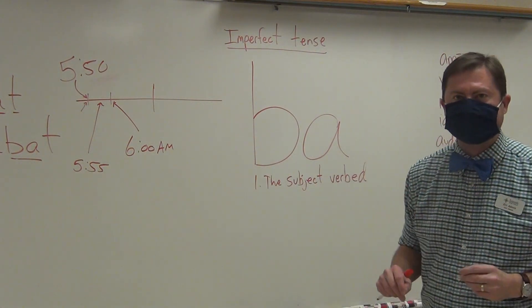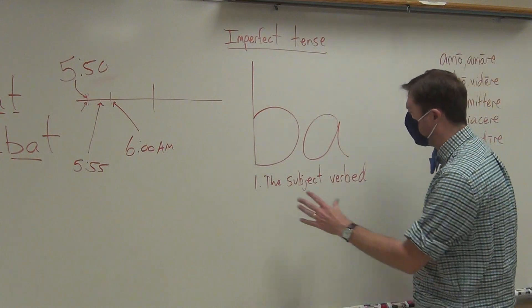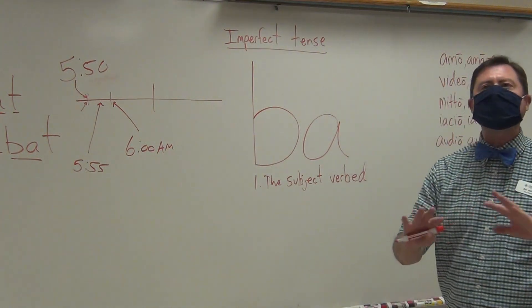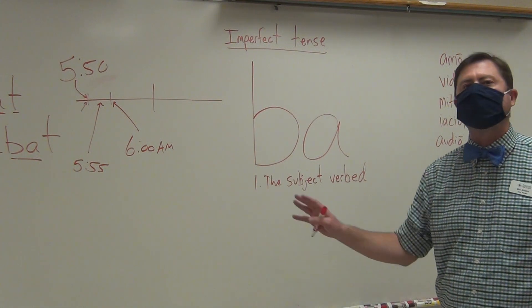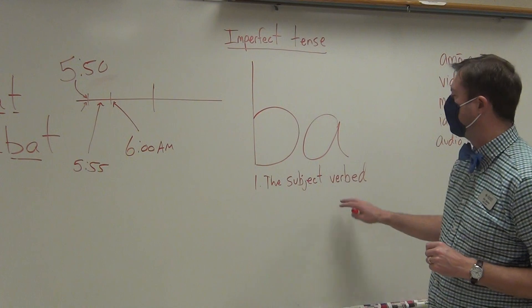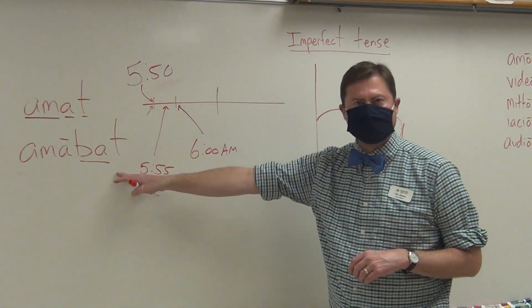For both the imperfect and the perfect tense, you can say the subject verbed, because that expression in English is not implying either way completed or incomplete. It just says it happened in the past. And so I can say over here for my verb amabat: he loved, with an ED.